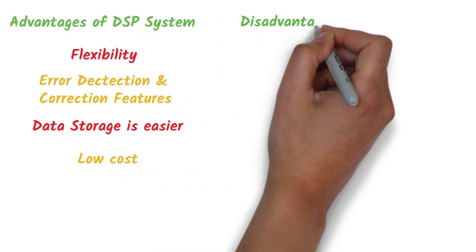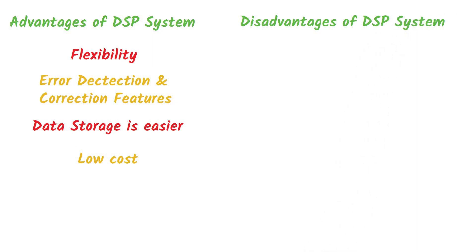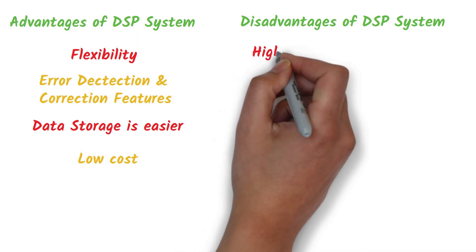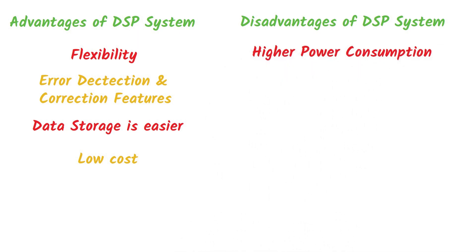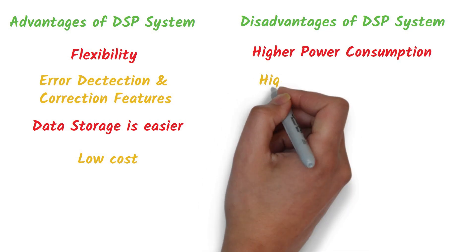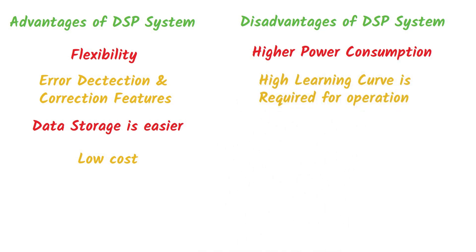Disadvantages of DSP systems include higher power consumption due to the use of many transistors, and a higher learning curve required for operation, as each DSP has different hardware architecture and software instructions.